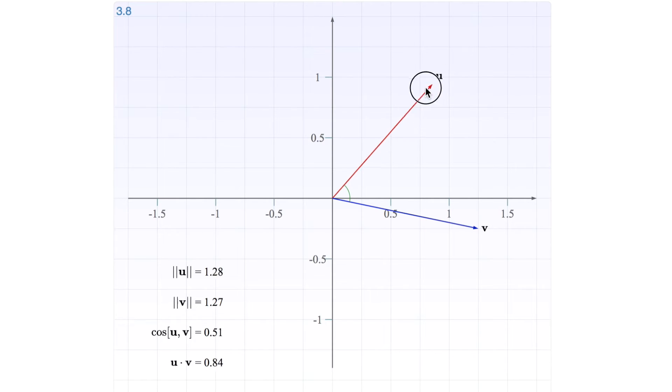So here you can see that if we change u, we change the length of u and also the dot product proportionally. If we try to keep the angle constant, you will see that happens. The same goes for v.